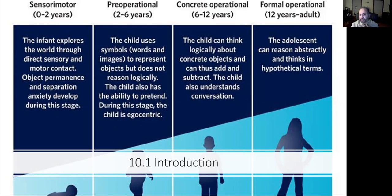Finally, adolescence to adulthood is the formal operational stage, which is 12 to adulthood. The adolescent can reason abstractly and think in hypothetical terms. So we're moving into physical development — many people don't connect physical development with psychological development, but the truth is that these concepts go hand in hand.